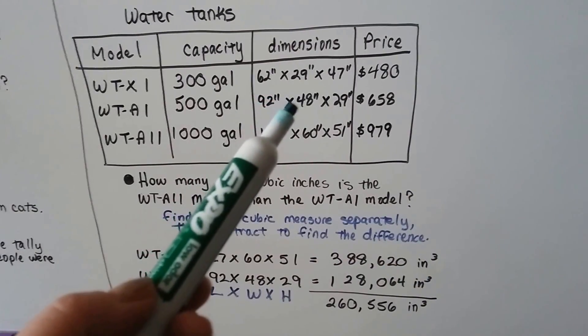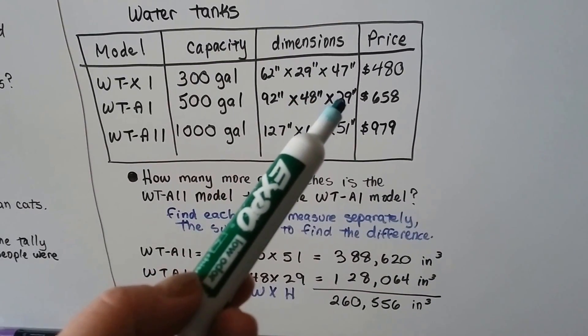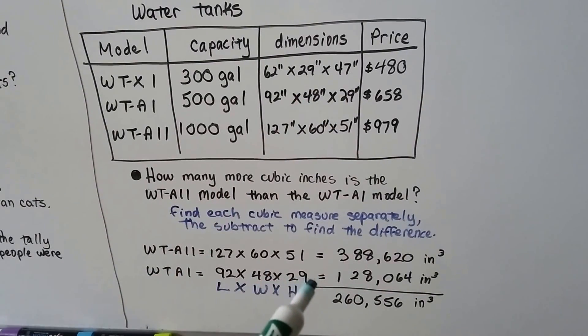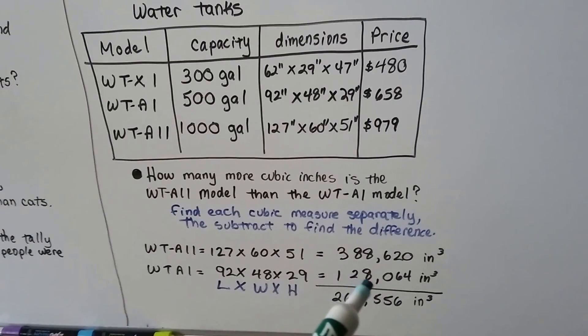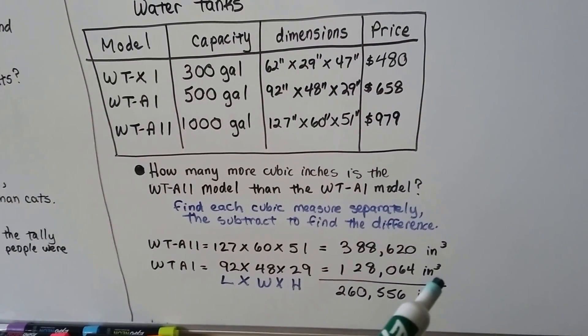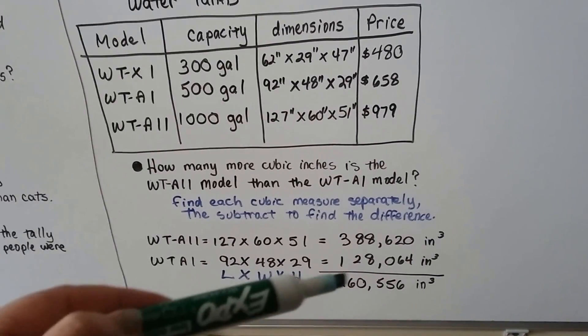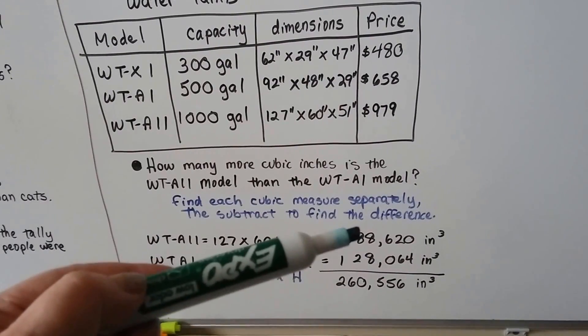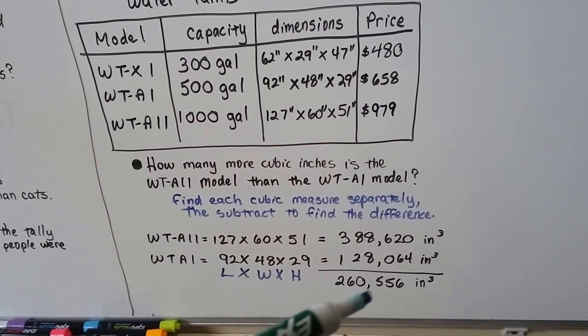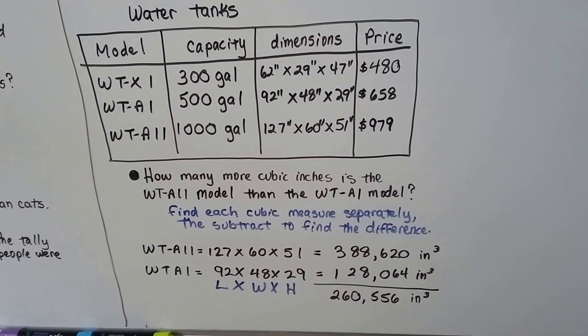Then we do 92 times 48 times 29 to get the cubic measure. And we get 128,064 inches cubed. That's the length, the width, and the height. We subtract the second number from the first number and get 260,556 inches cubed.